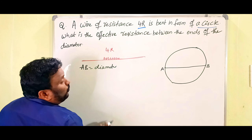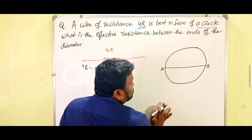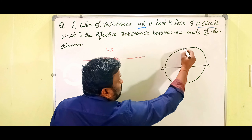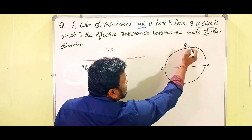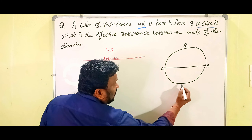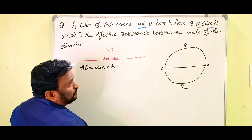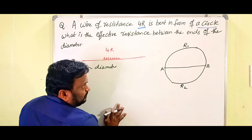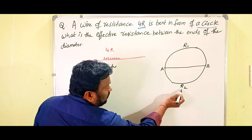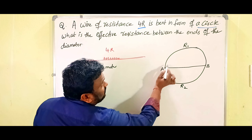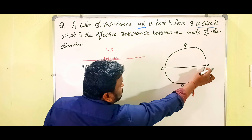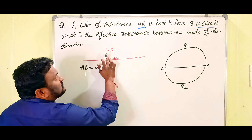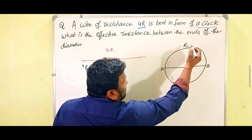We need the effective resistance between the ends of the diameter. This is one point and this is another point — joining these two gives the diameter, so AB is the diameter. The wire is now divided into two parts: above AB there is wire with resistance R1, and below AB there is wire with resistance R2. R1 and R2 are in parallel.